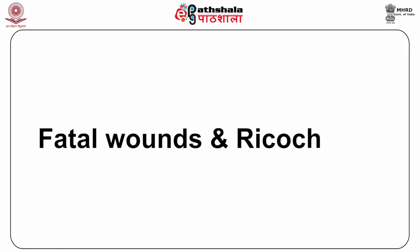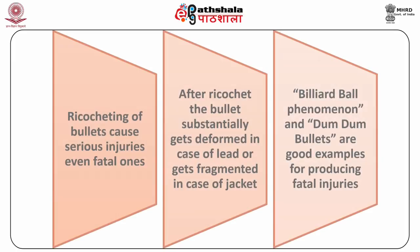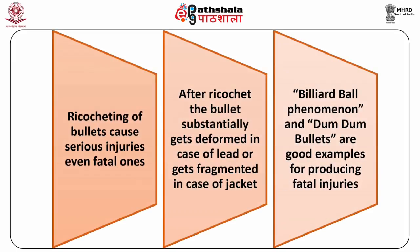Fatal wounds and ricocheting: ricocheting of bullets causes serious injuries, even fatal ones. It is well established that after ricocheting, the bullet substantially gets deformed in the case of lead, or gets fragmented in the case of a jacket. The ragged shape of the bullet is then capable of producing a devastating effect and the entry wound may be fatal. Billiard ball phenomenon and dum-dum bullets are good examples for producing fatal injuries.